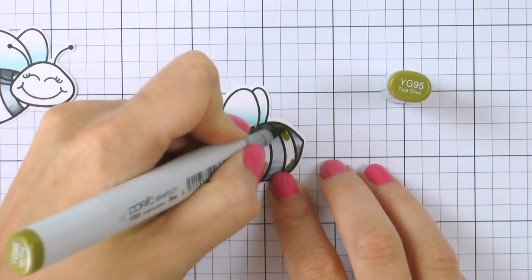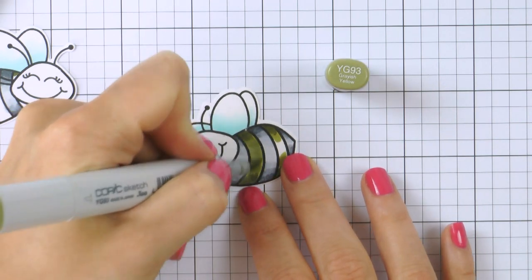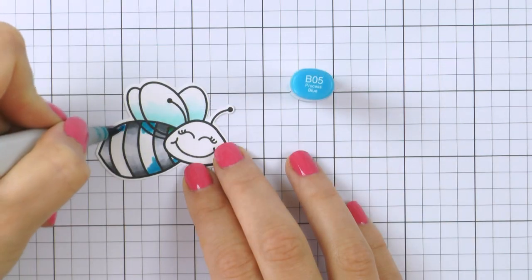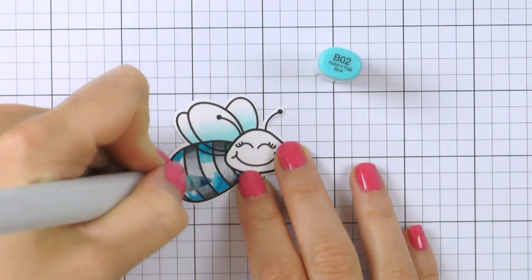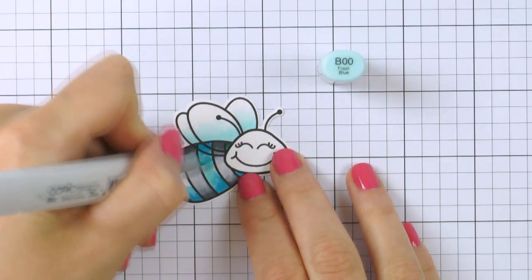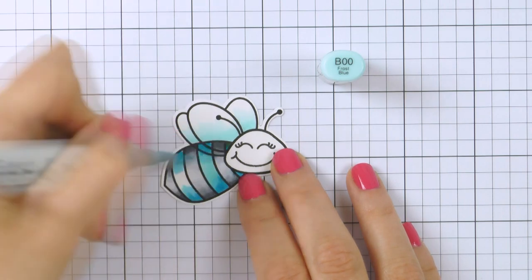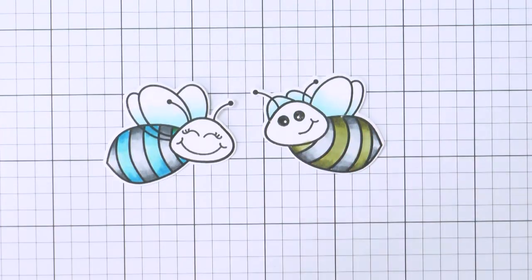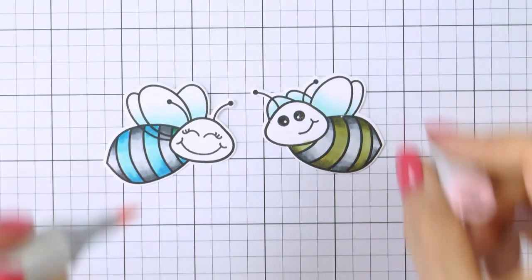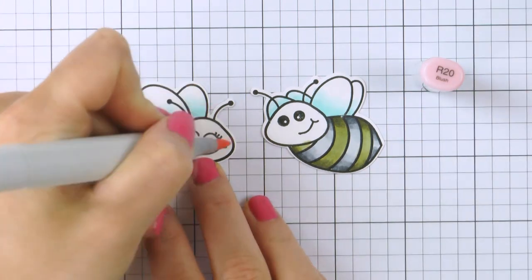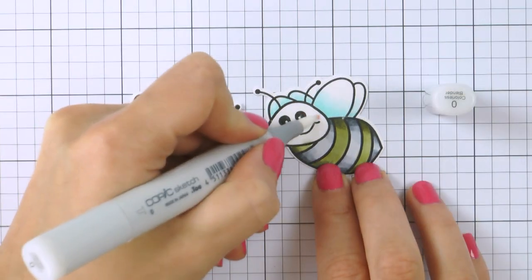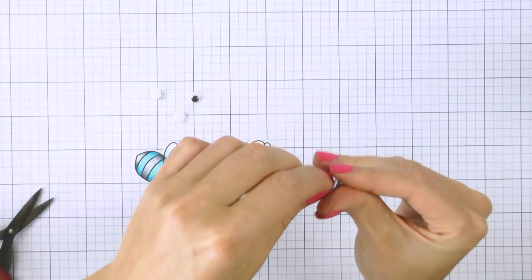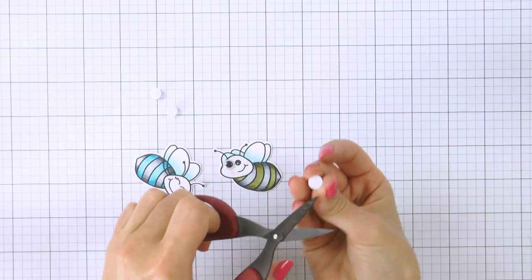I'm using green to color one of the bees and blue to color the other bee. The colors are YG97, YG95, YG93 for the green color bee and B05, B02 and B00 for the blue bee. So my bees are not yellow. You can by all means make them yellow and black but I wanted to create something different so I went with other colors here. I also used R20 to add blush and will soften that color using a colorless blender marker.